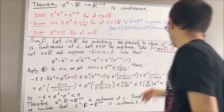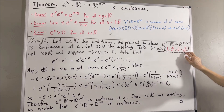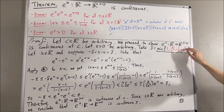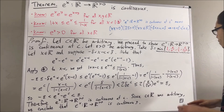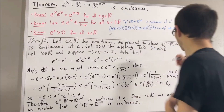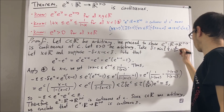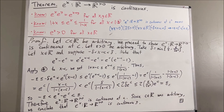We can also define delta so that delta is the smaller of just these two values, right? Because one-half is less than one, and epsilon over 2e to the c is less than epsilon over e to the c. And so, yeah, that's pretty much it for this video. Thank you.